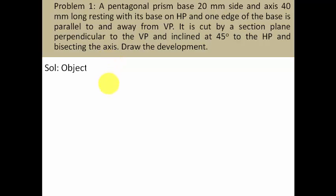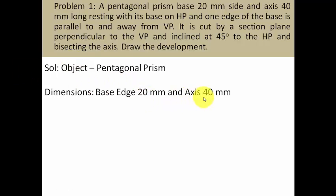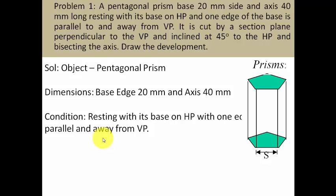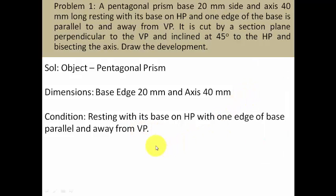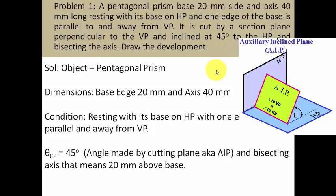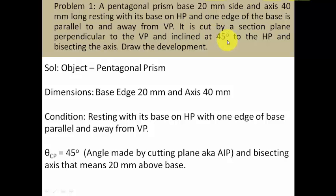We have this object in the form of a pentagonal prism with a base of 20 mm side and an axis of 40 mm. One edge of the base is parallel to and away from the VP. The cutting plane is an AIP — auxiliary inclined plane — perpendicular to the VP and inclined at 45 degrees to the HP. This cutting plane bisects the axis, so the bisection point lies 20 mm above the baseline or XY line.